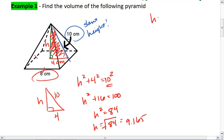Okay, now I know my h. To find the area of the base, the base is a square. So that area will be 8 times 8, which is 64.